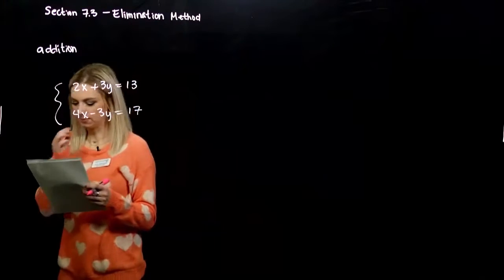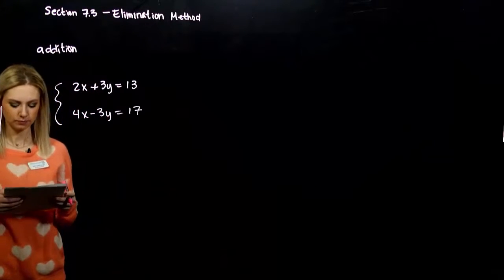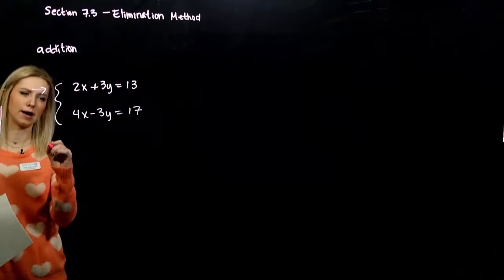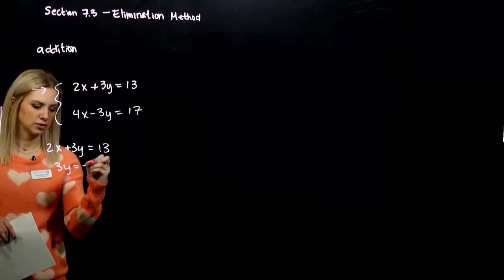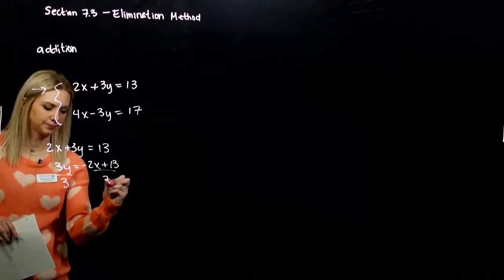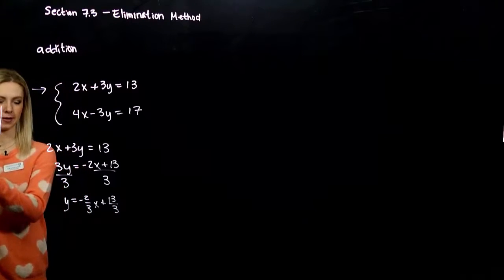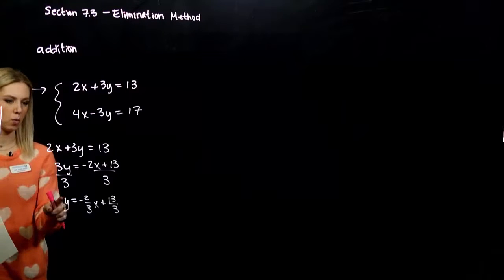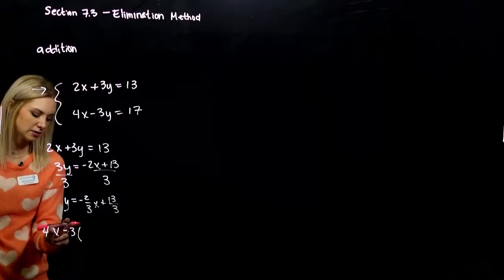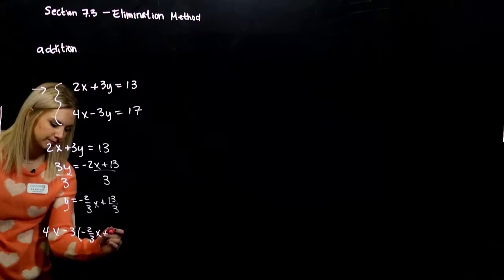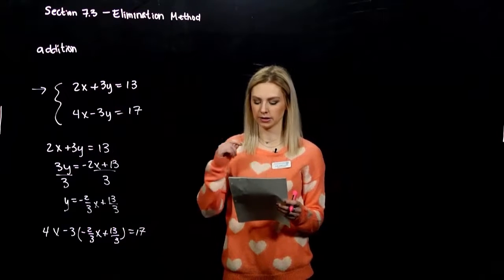If we're going to use the substitution method, we have to solve one of them for a variable. We have to isolate something. Right now, none of them are isolated. So let's say, take the first one, and I want to isolate it for y. This is our only knowledge so far of how to solve systems without graphing. So if I move 2x to the other side, divide by 3, y is negative 2 thirds x plus 13 thirds. Now I want to substitute wherever I see y in the second one with this. So what do you notice? We have to deal with fractions.